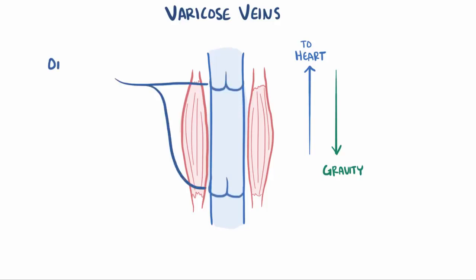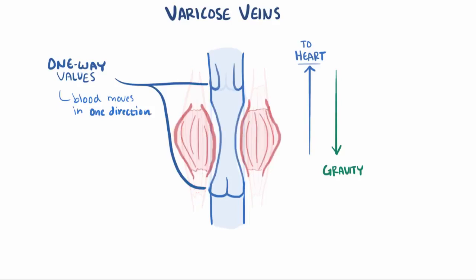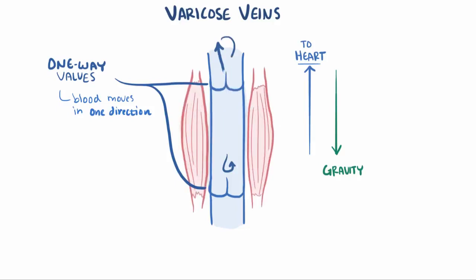Most veins also have one-way valves. These valves only let blood move in one direction, toward the heart. So as the skeletal muscles contract, it squeezes the veins, and this lower valve stays closed to prevent blood from going downward, while the upper valve lets blood through. But even though gravity wants to push it back down, that blood isn't allowed to fall back down through the upper valve.